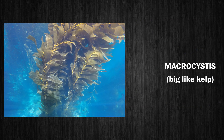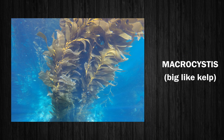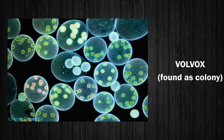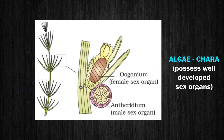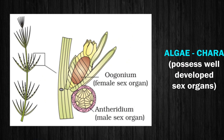Some algae such as Macrocystis are very big, like kelp. Some algae such as Volvox are found as a colony. Generally algae do not have sex organs, but algae like Chara possess well developed sex organs.